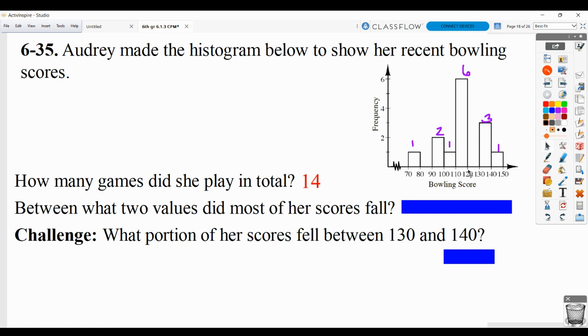Between what two values did most of her scores fall? Well, they fell between 110 and 120, but remember, the 120 bin actually starts here. So really, it's between 110 and 119. Because at 120, it would go into the next bin, which there are no games that she bowled in that range.